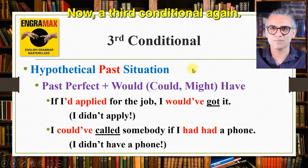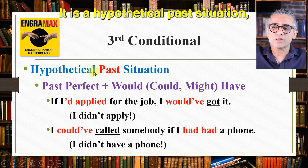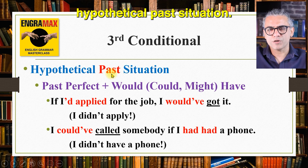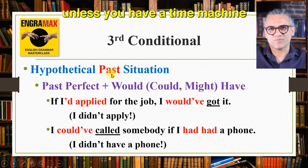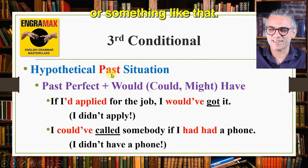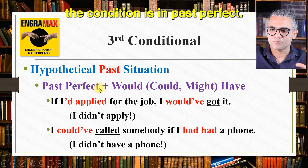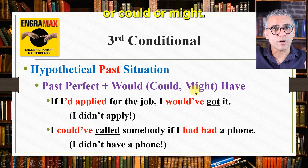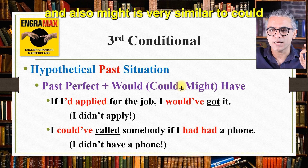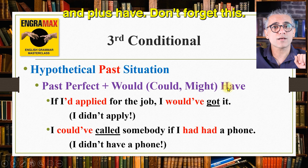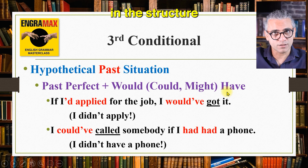Now, a third conditional. The most challenging conditional is probably the second conditional — the third conditional is easy. It is a hypothetical past situation, very useful when you want to express regrets, since we cannot change the past. The structure: the condition is in past perfect; the consequence is would, could, or might — with different meanings — plus have. 'Would' expresses certainty; 'could' and 'might' express probability. Don't forget the 'have' — that is the key difference between the third and second conditional in the consequence structure.